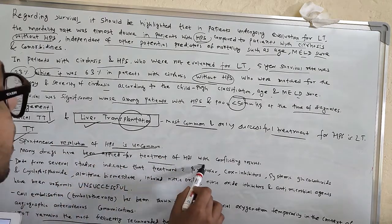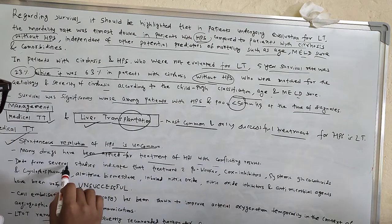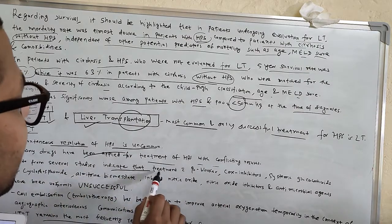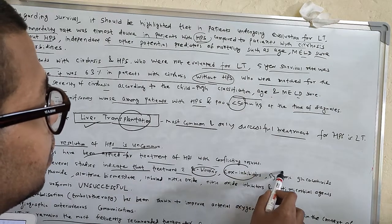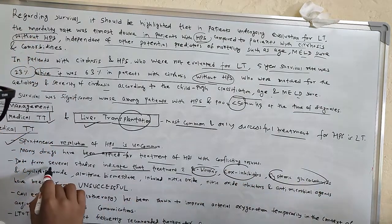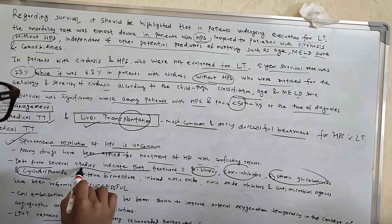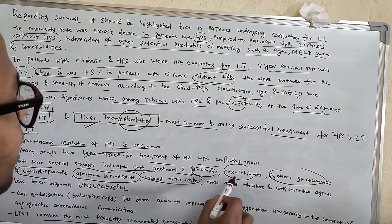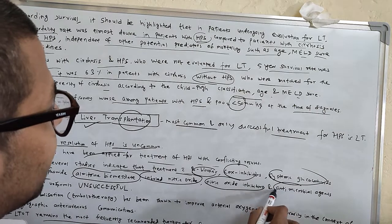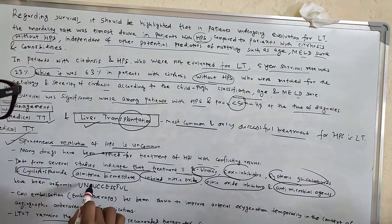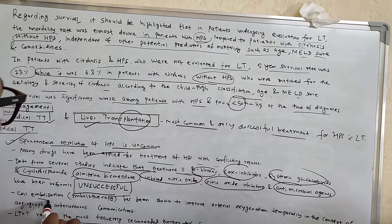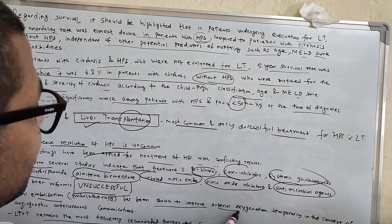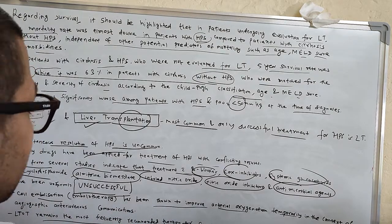Many drugs have been applied for treatment of HPS with conflicting results. Data from several studies indicate that treatment with beta-blockers, COX inhibitors, leukotriene inhibitors, systemic glucocorticoids and cyclophosphamide, almitrine bismesylate, inhaled nitric oxide, nitric oxide inhibitors, and antimicrobial agents have been uniformly unsuccessful. While therapy has been shown to improve arterial oxygenation temporarily in the context of angiographic arteriovenous communications.